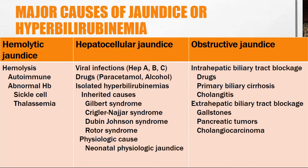The major causes of jaundice involve hyperbilirubinemia. We have three major types: hemolytic jaundice, hepatocellular jaundice, and obstructive jaundice. In hemolytic jaundice, there is massive breakdown of RBCs. Causes include autoimmune conditions where the body creates antibodies that destroy RBCs, and abnormal hemoglobin conditions such as sickle cell anemia and thalassemia, where a huge number of RBCs are broken down in the spleen.